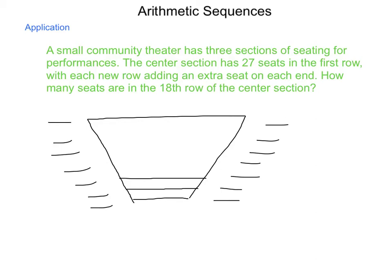So how many seats are there on the 18th row of this center section? Well, we have 27 here, and it goes to 29, then 31, and what would be the pattern? Well, as a recursive, a sub n equals a sub n minus 1 plus 2, and a sub 1 is 27. As an explicit formula, a sub n is going to equal our first term, 27, plus that common difference of 2 times n minus 1.